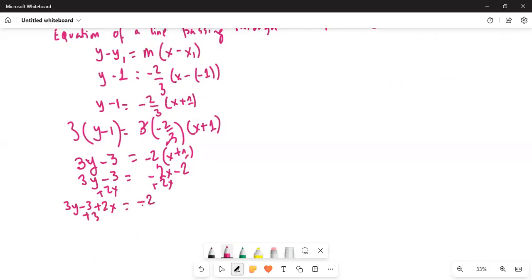Then I'll add 3 on both sides, and I get 3y plus 2x equals 1.